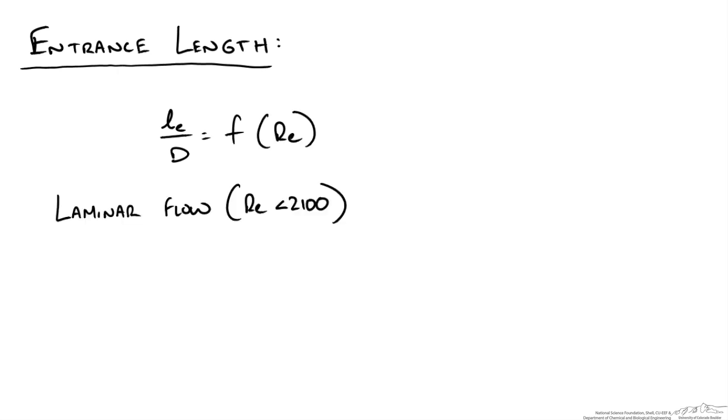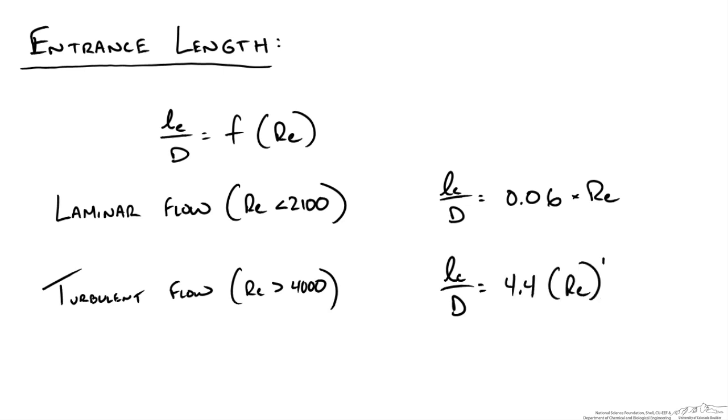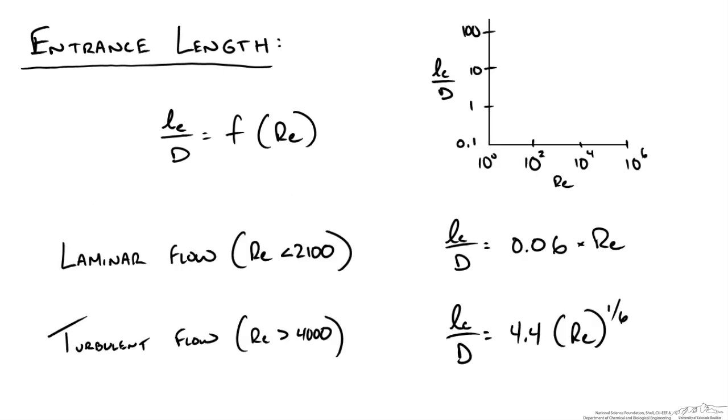So for laminar flow with a Reynolds number of less than 2100 for pipe flow, this typically correlates very well with the following relationship where we take 0.06 times the Reynolds number. However for turbulent flow it is not quite as straight forward. Turbulent flow, this dimensionless entrance length is equal to 4.4 times the Reynolds number to the 1/6th power.